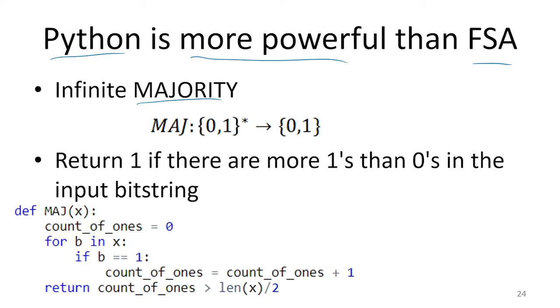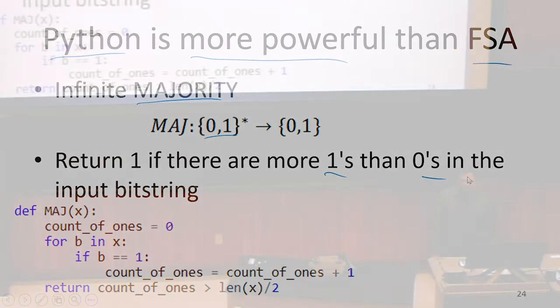We could generalize majority to take any number of input bits. We're going to say this returns one if there are strictly more ones than zeros, so it's not difficult to generalize majority for any number of input bits where we say it returns one if the strict majority of the input bits were ones.